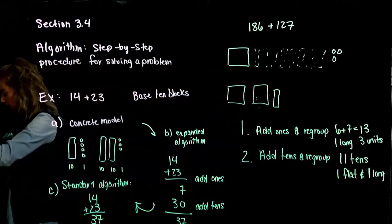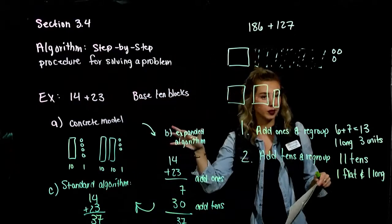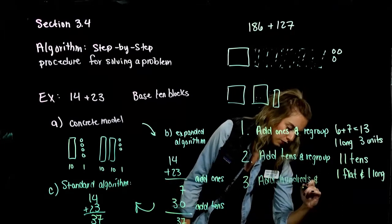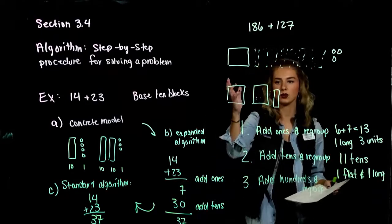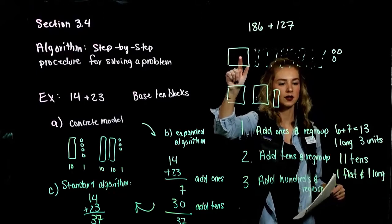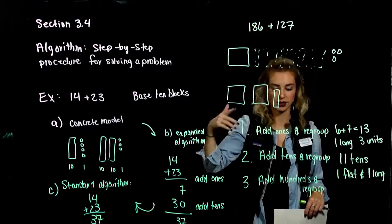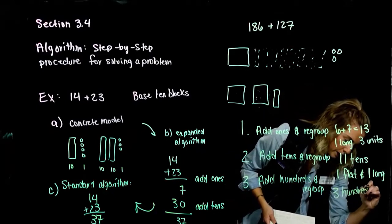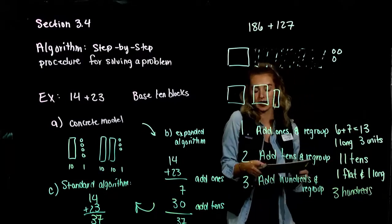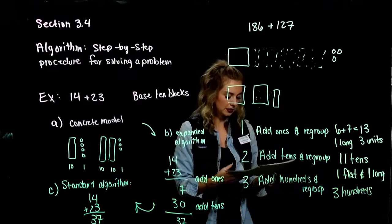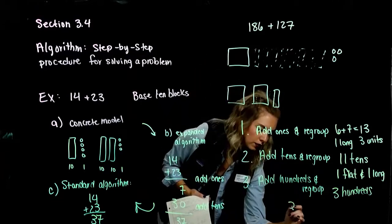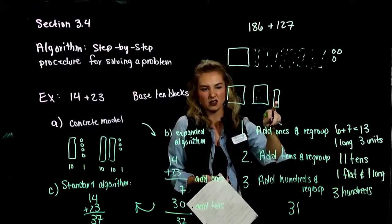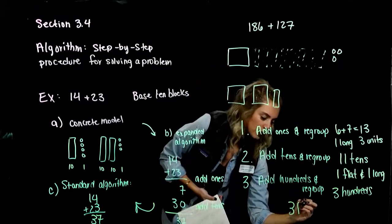Step 3: add the hundreds and regroup if possible. We have 1, 2, 3 hundreds. We'd need 10 hundreds to group into 1,000 and we don't have that. So we're left with just 3 flats. Combining everything: 3 hundreds, 1 ten, and 3 units. So the sum is 313.